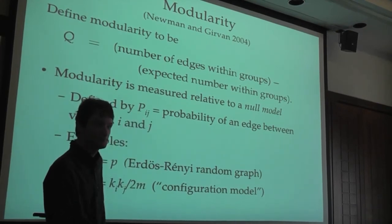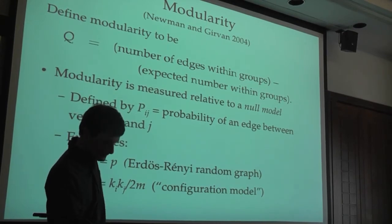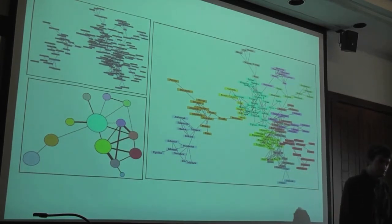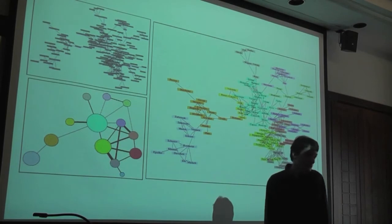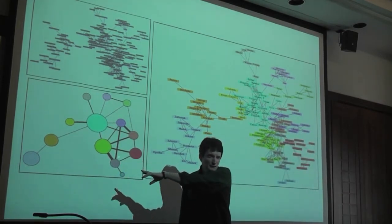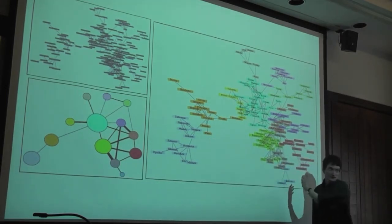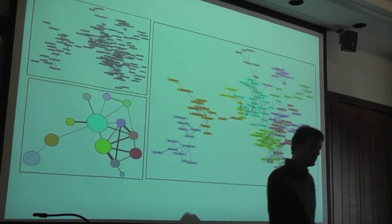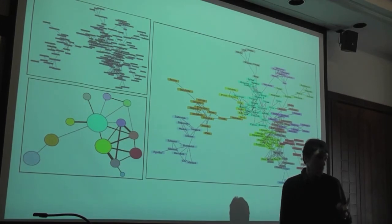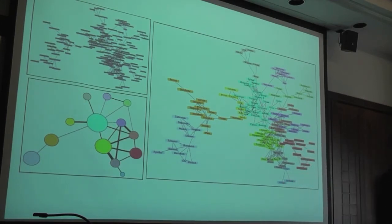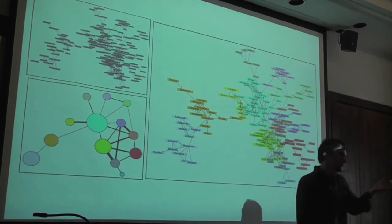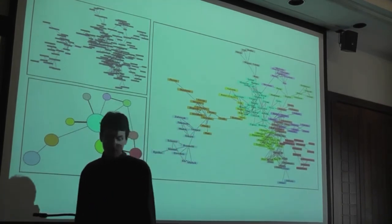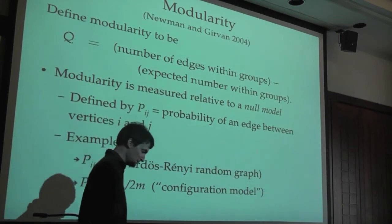A question came up about whether you can put weights on the connections in this null model. You absolutely can — the methods generalize straightforwardly to weighted networks where connections have varying strengths, such as how much time two friends actually spend together. The thick edges shown in the visualization aren't real weights — they just indicate how many parallel edges exist between two communities. But certainly networks with genuine strength measures can be handled with this framework.